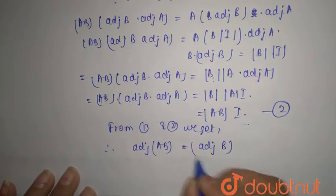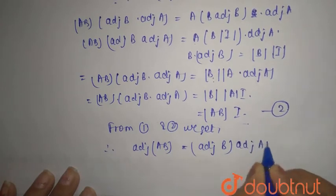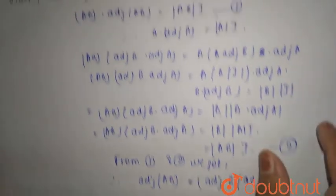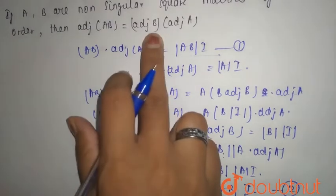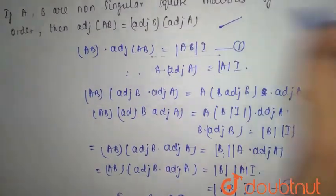B into adjoint of A. And that we needed to prove that adjoint of AB equals adjoint of B into adjoint of A. Thank you.